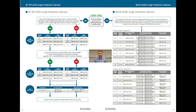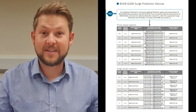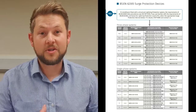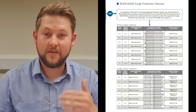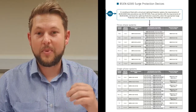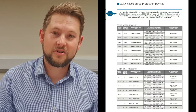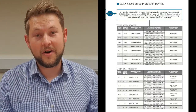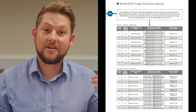The first question we're going to ask is: does the building have structural lightning protection installed to BS EN 62305? If the answer is yes, then we move towards a 62305 type device. Within the guide we have a table which gives all the different types of device dependent on the level of lightning protection installed and also the earthing arrangement and phase.